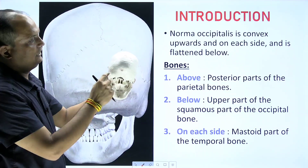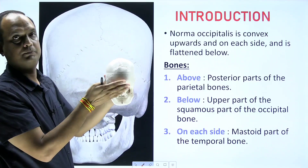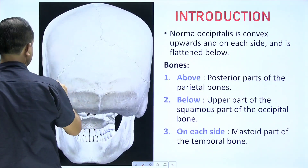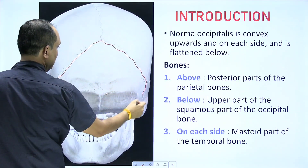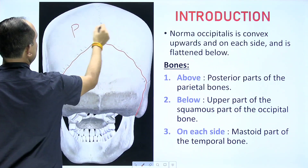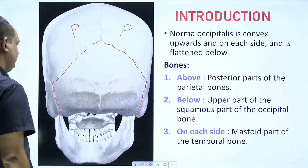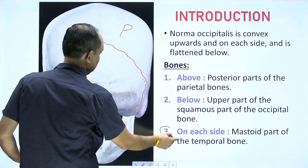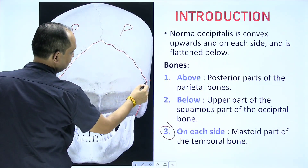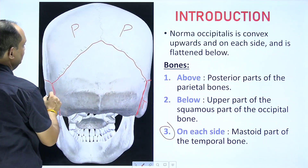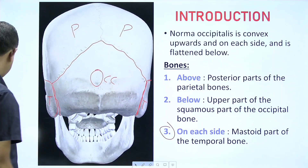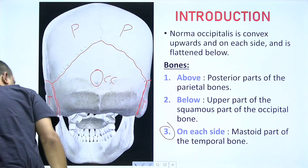The bones visible in this posterior view are: first, the major portion of the occipital bone; on the upper side you will find the parietal bones present on right and left side; and on the sides you will find a small projection of the temporal bone. So you will have two temporal bones, two parietal bones, and a single large occipital bone.